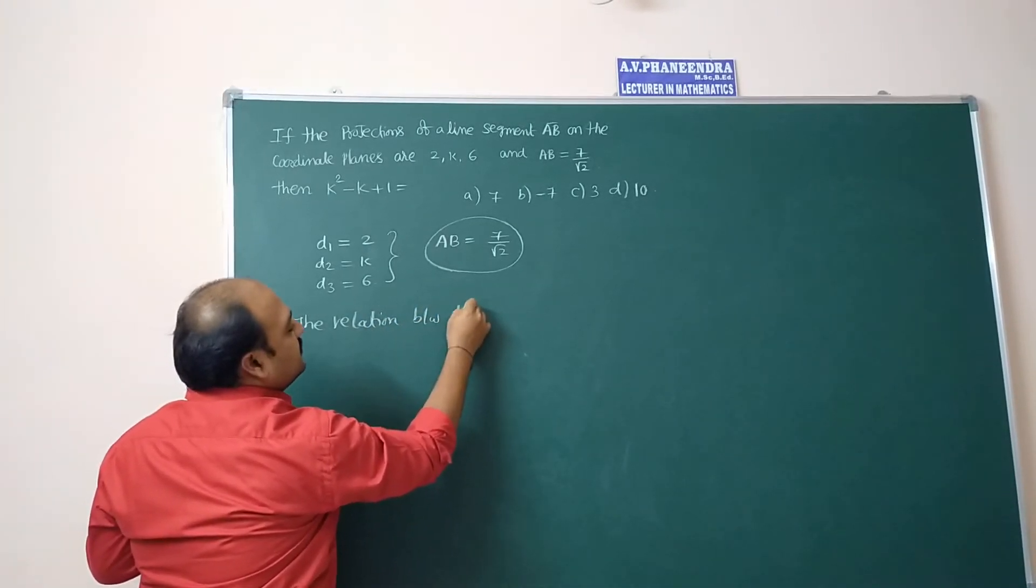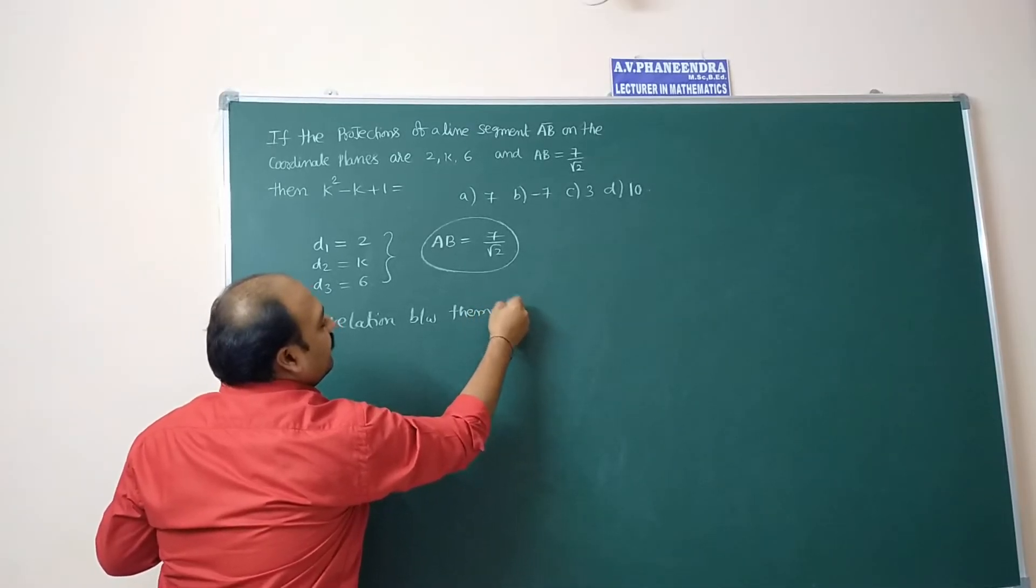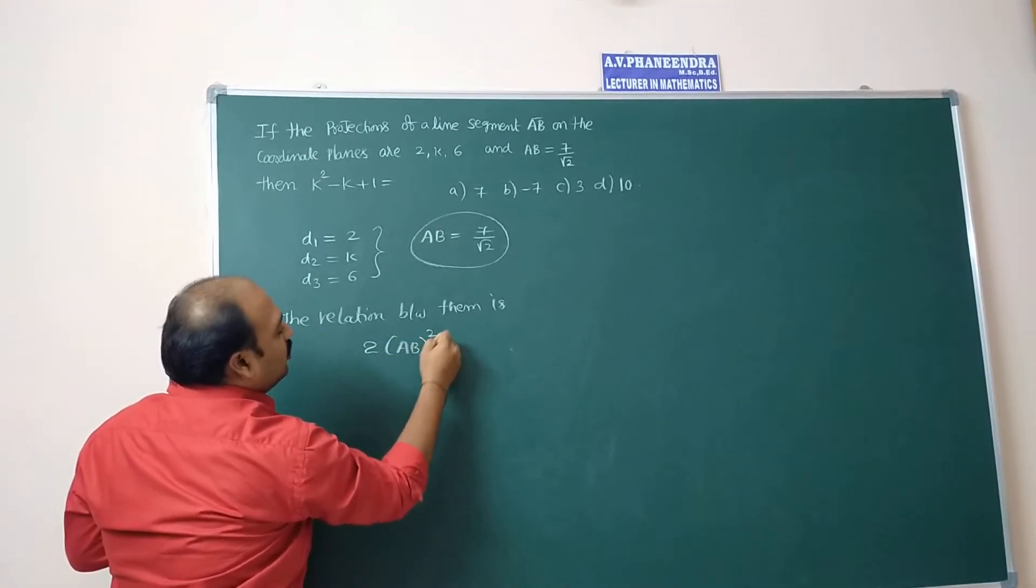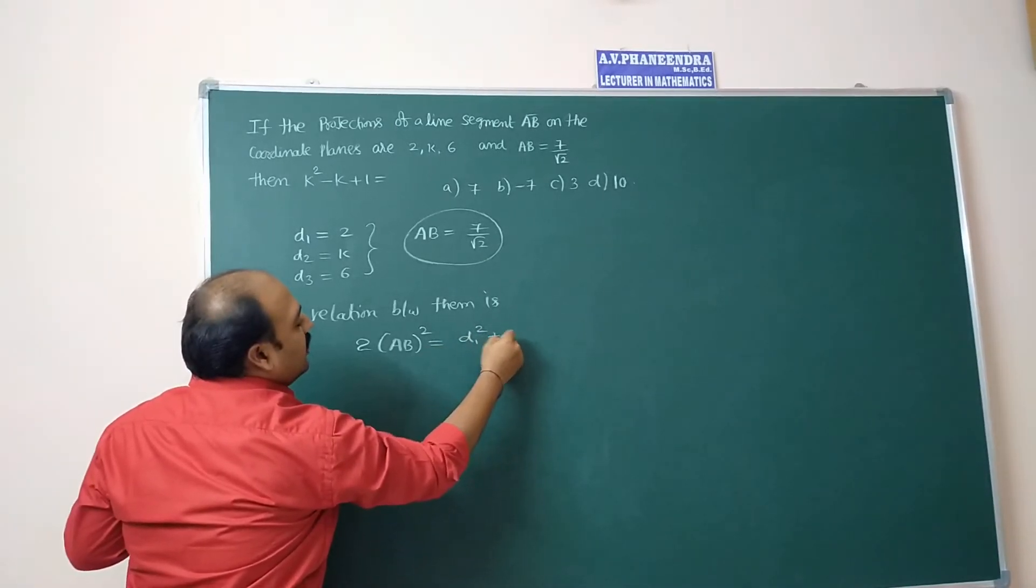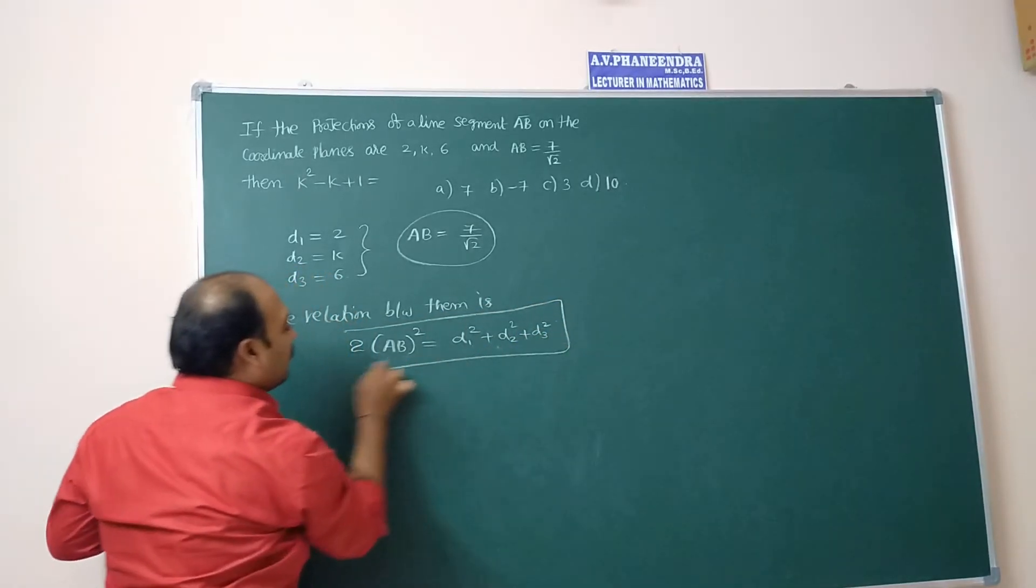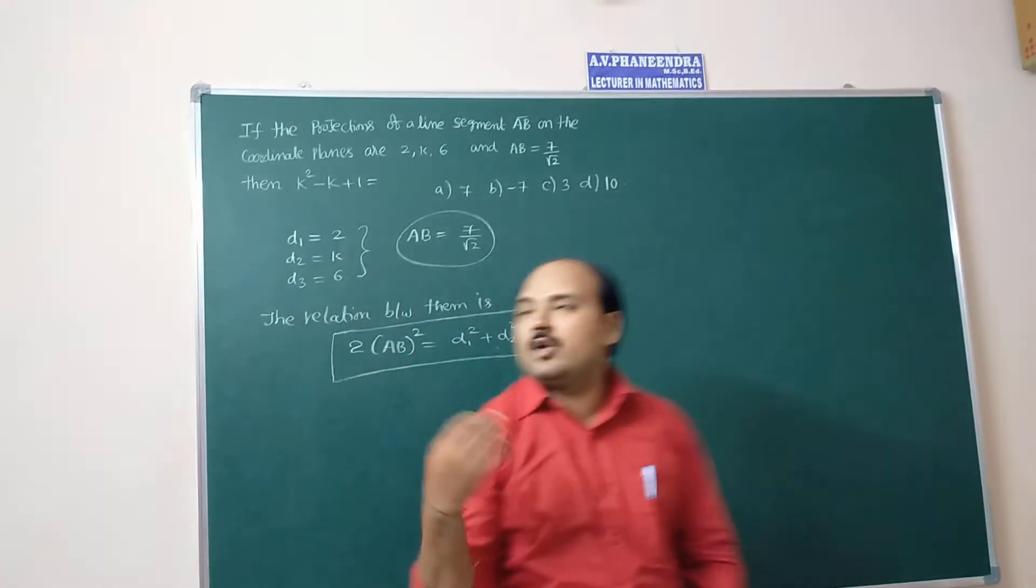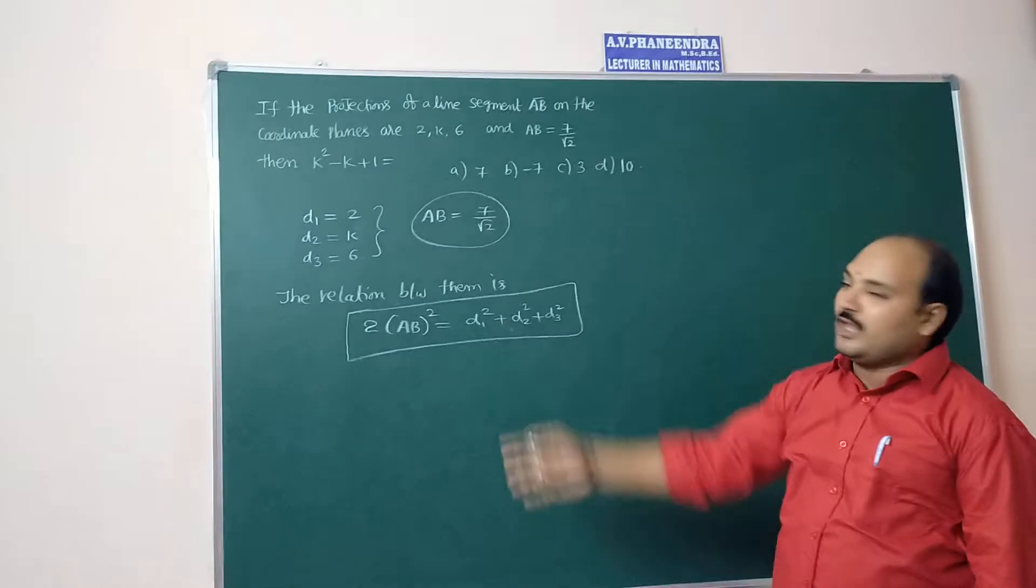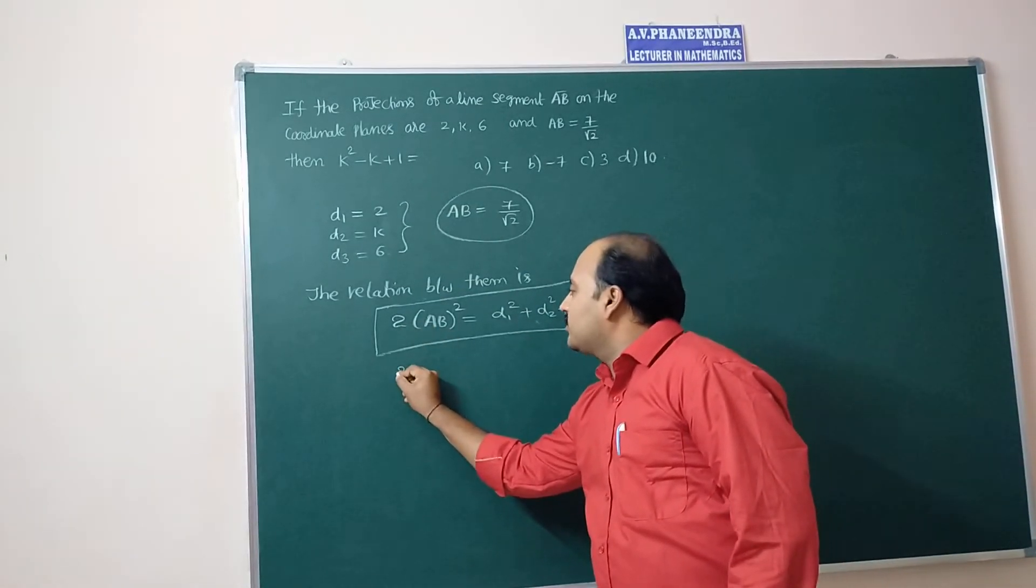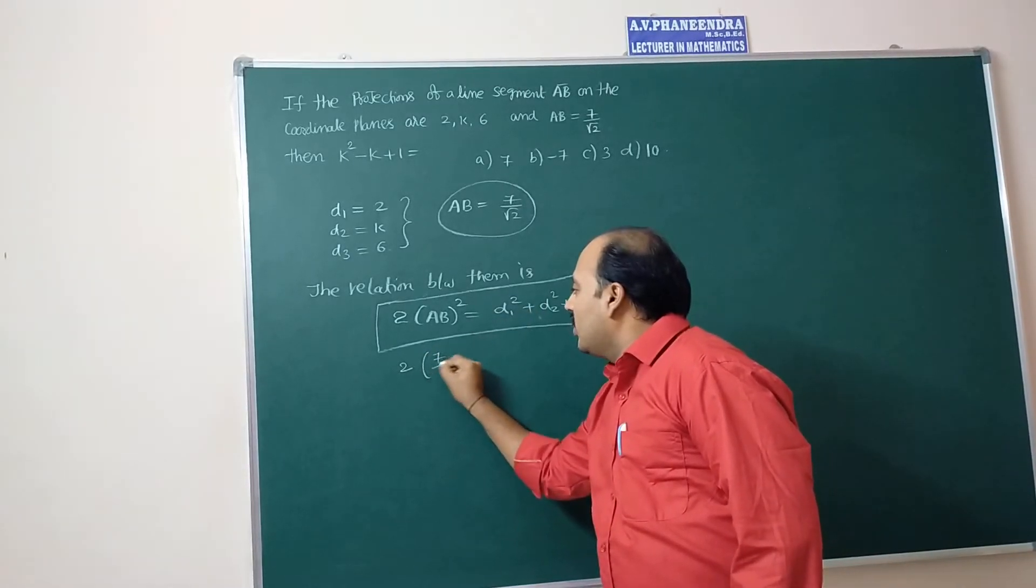Between them is 2 times of AB square equal to d1 square plus d2 square plus d3 square. By using this relation we are going to calculate the value of k. So 2 times of AB square, 7 by 2 whole square.